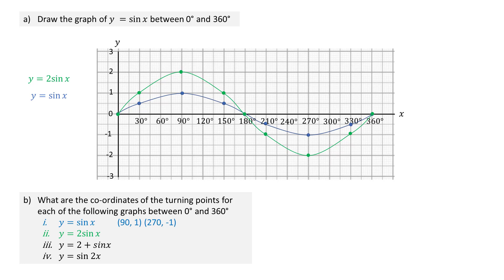The turning points of y equals 2 sine x are (90, 2) and (270, −2). To sketch y equals 2 plus sine x, add 2 to the y value of sine x. So when x equals 0, y equals 2 plus sine 0, which gives y equal to 2. When x equals 30, y equals 2 plus sine 30, which gives 2.5. When x equals 90, y equals 2 plus sine 90, which is 3. Continuing to add 2 to the y values of sine x and joining these points gives the turning points (90, 3) and (270, 1).